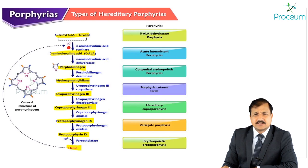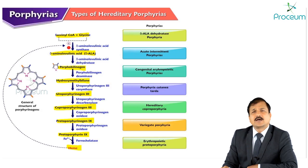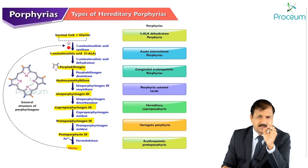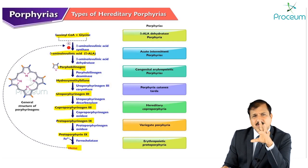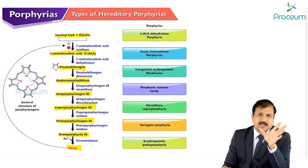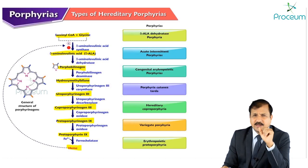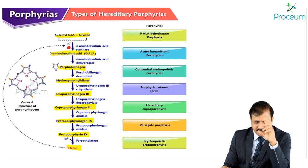If delta-aminolevulinate synthase 2 — specifically in the erythroid tissue — is mutated, it gives rise to X-linked sideroblastic anemia. This is not placed under the porphyria category because succinyl-CoA and glycine remain as individual molecules, so no porphyria results. Instead, you will see decreased hemoglobin synthesis because heme is not formed, leading to anemia. Now let's look at what actually causes porphyria.